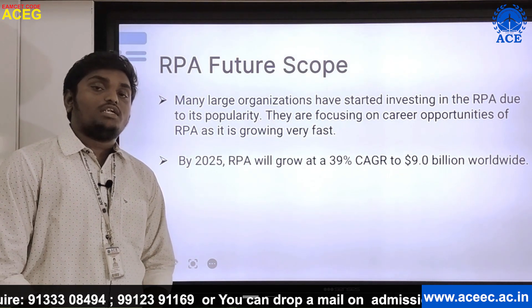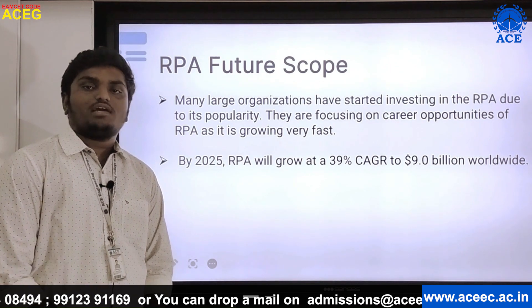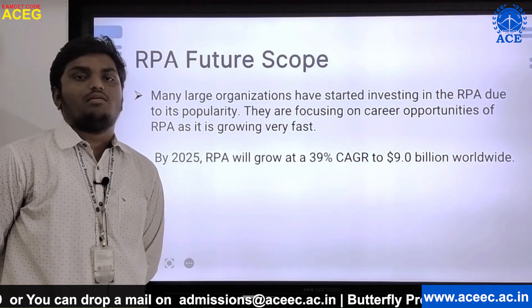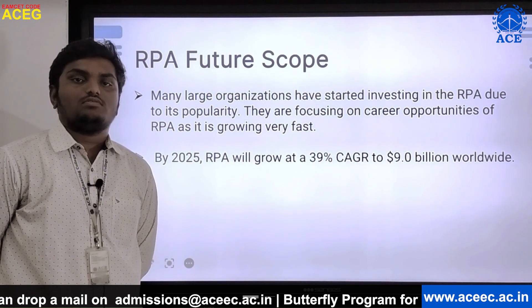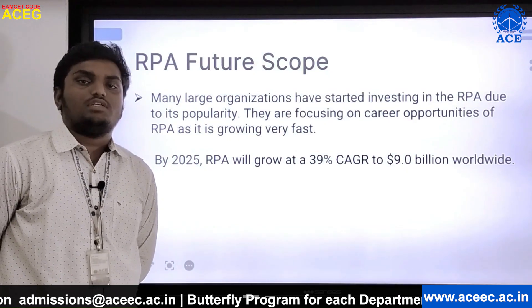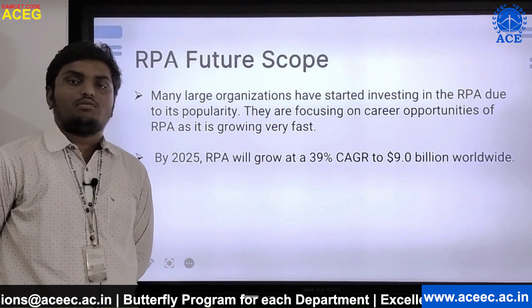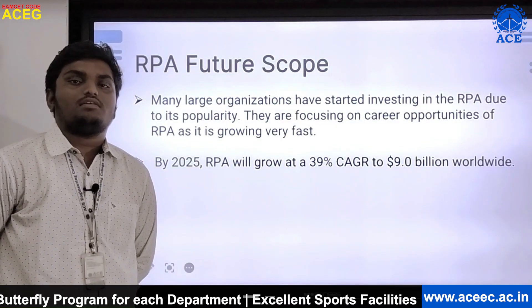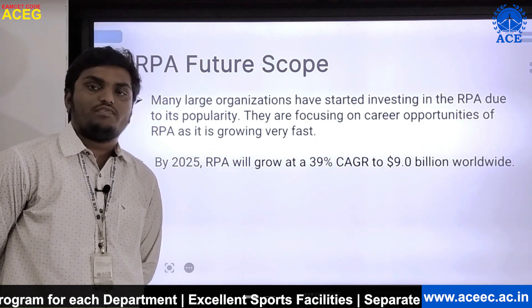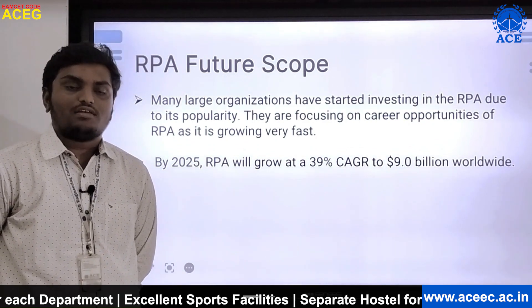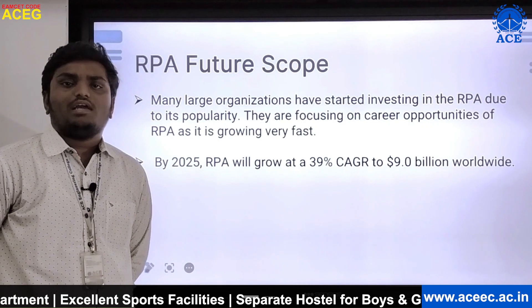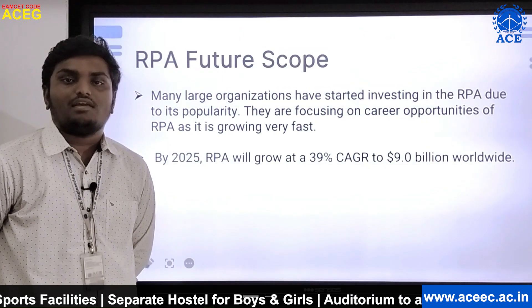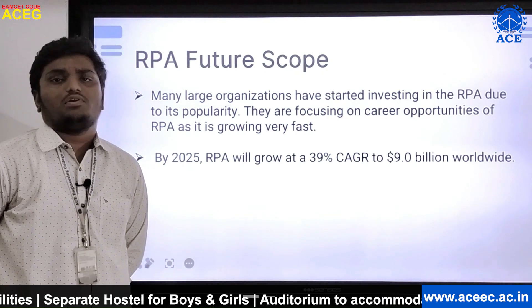RPA is easily understandable and students can survive in the software market. If you want to share anything on social media — for example on Facebook — you have to choose an image, write a caption, and then post it. The same process is repeated on other platforms like Instagram, Twitter, and LinkedIn. You have to go to each platform and share the same thing, making the process repetitive and time consuming.